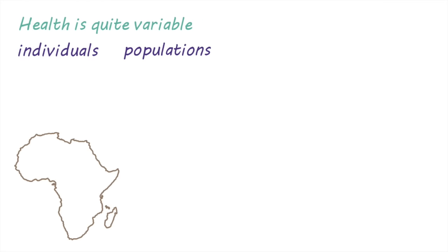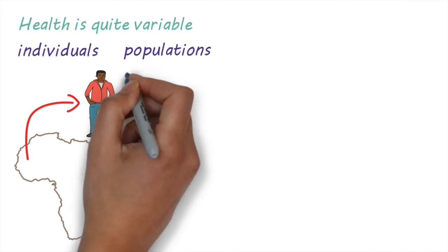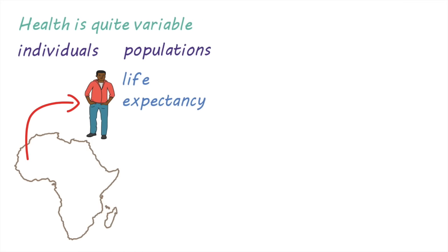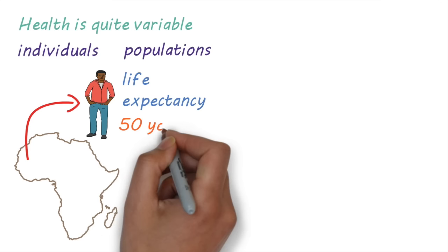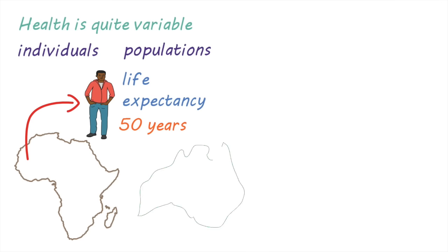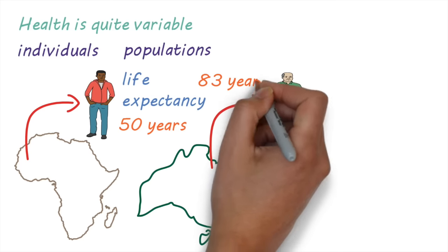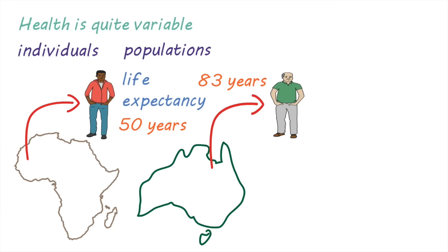Let's take an example. In 2015, the life expectancy of a child born in Sierra Leone was 50 years, whereas in Australia it was 83 years — a difference of 33 years.